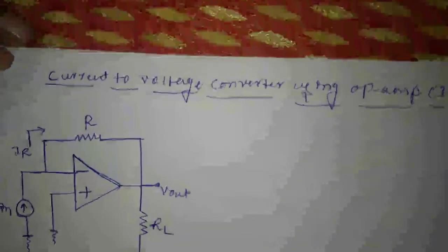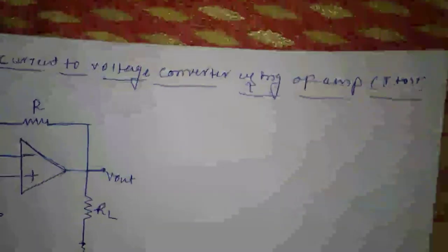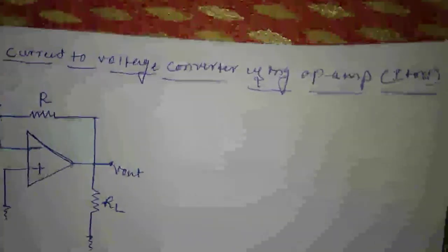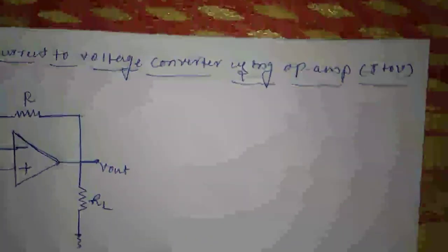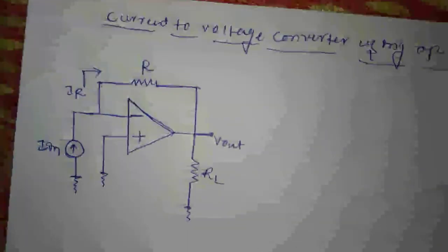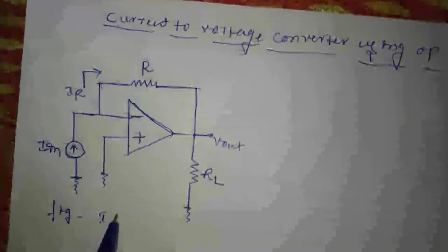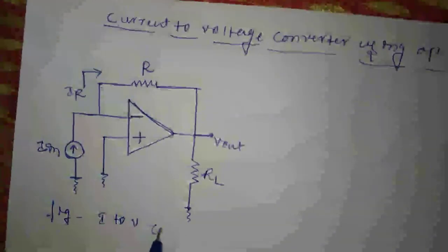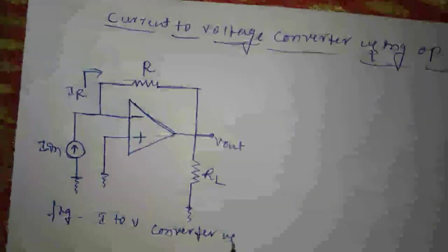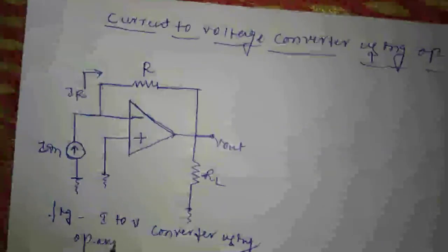Hello friends, yesterday we saw the voltage to current converter. Now we will see the current to voltage converter using op-amp. Here you can see the diagram — current to voltage converter using op-amp with grounded load.